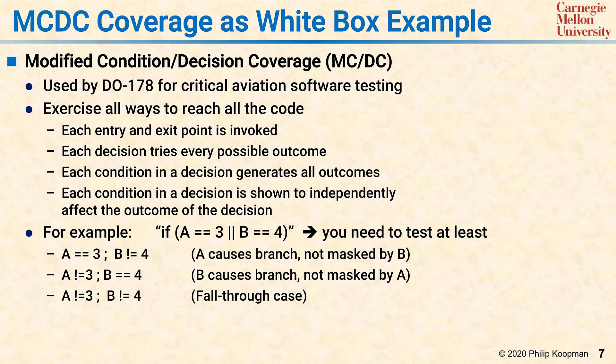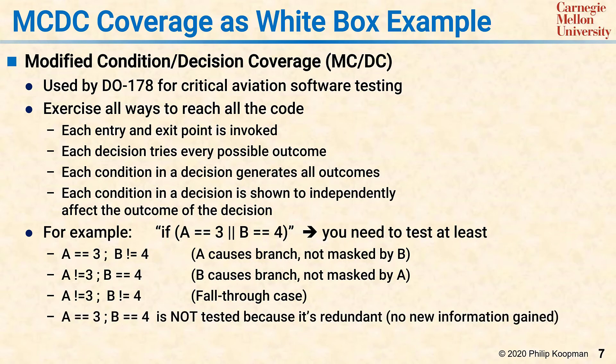While it seems like almost everything has to be tried, you do not have to try A is 3 and B is 4, because that's already been covered by the first two cases. If you're not quite sure, go look at the list at the top of the four decision criteria and convince yourself the first three test cases check all the boxes and the fourth one is not needed.